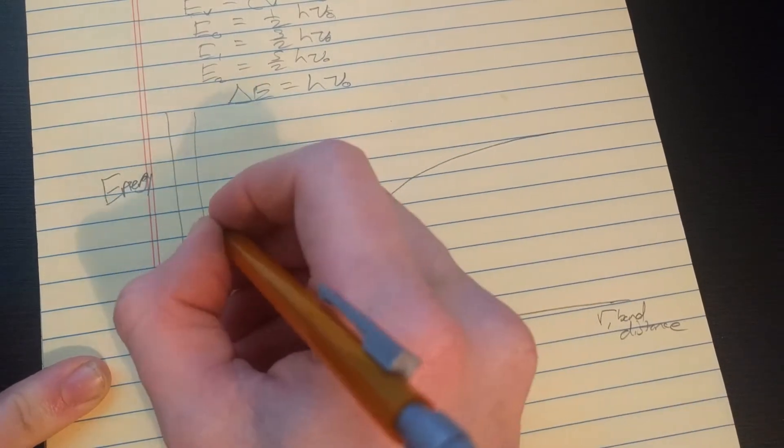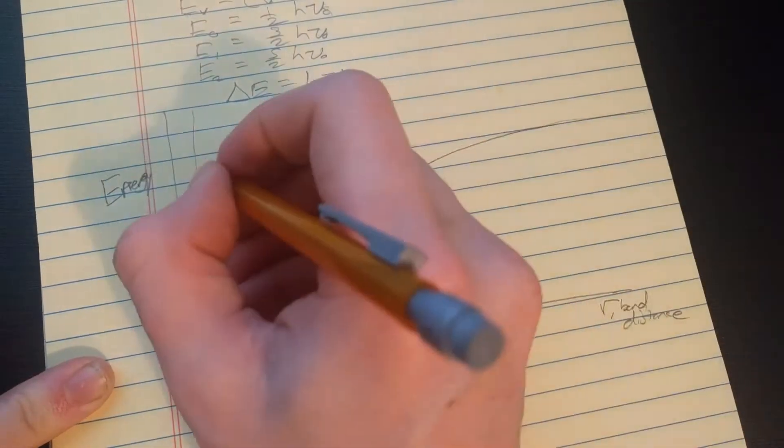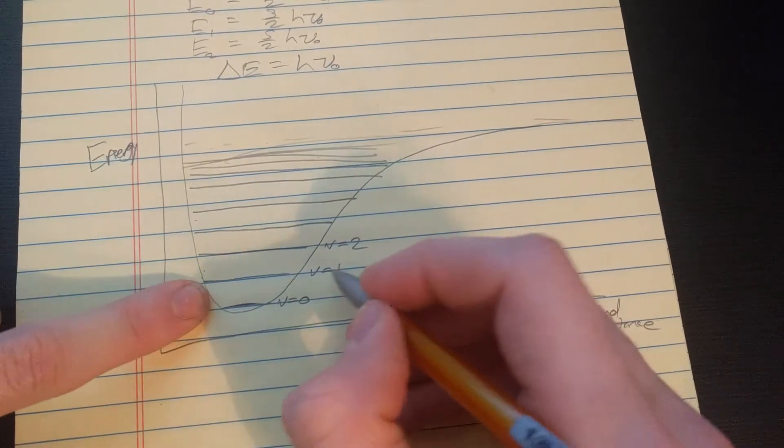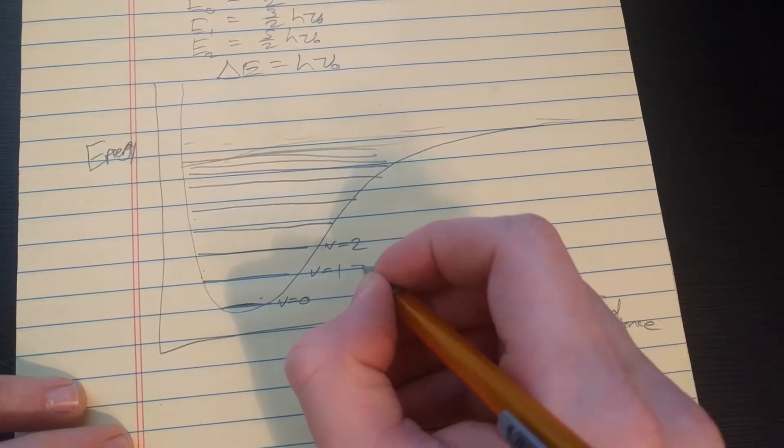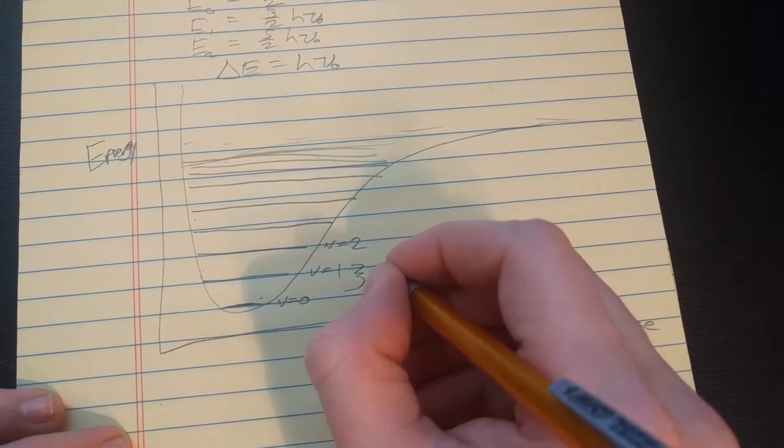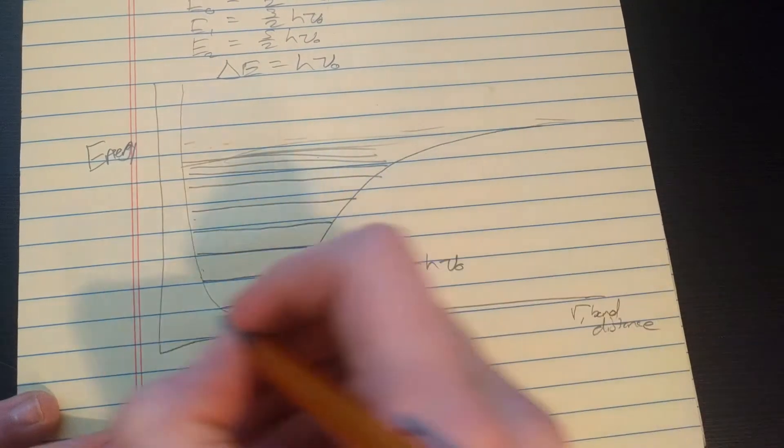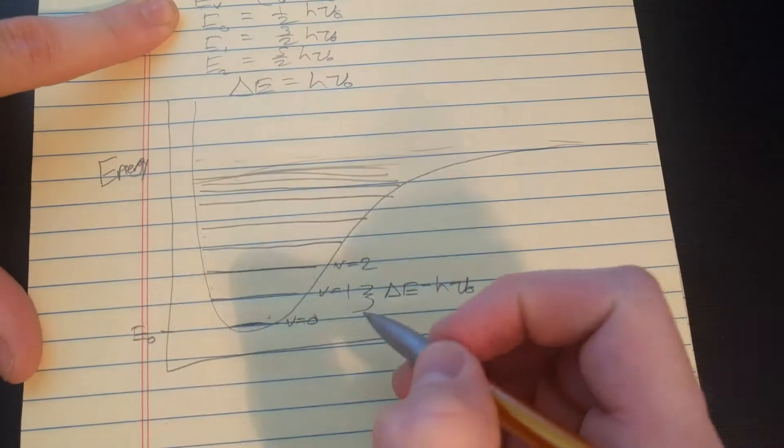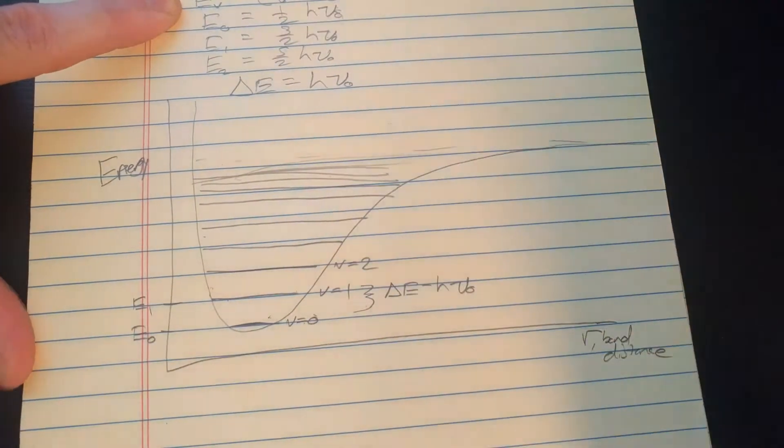But, as you go higher up, the energy levels actually get closer and closer together. And, since you're approaching this asymptote here, they basically become infinitely close way up here. But, down here, they're pretty much equally spaced apart. So, the distance between these is delta E and that's h nu naught. Because, v zero lies at E zero, which we showed up there. And, this state lies at E one. So on and so forth.